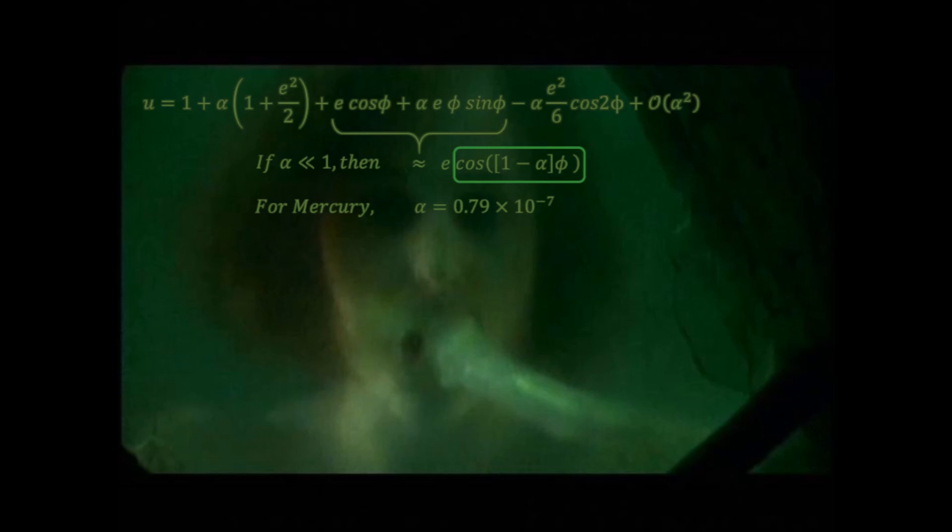In order for the cosine function to return to its initial value, phi must reach not 360 degrees, but 360 divided by 1 minus alpha, which to the first order on alpha gives a correction of about 43 arc seconds per earth century.